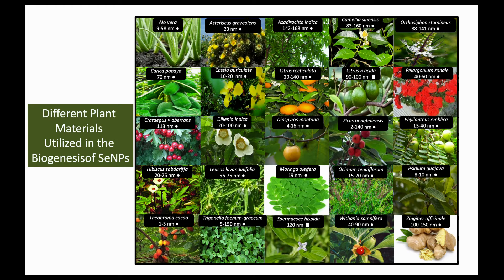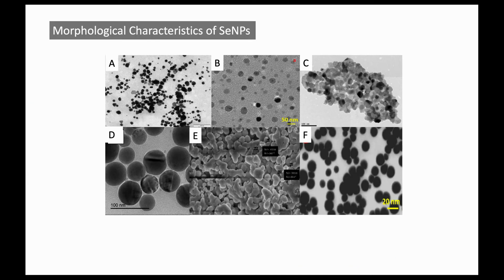Various plant species have been used previously to synthesize selenium nanoparticles of different sizes and shapes having different pharmacological significance. Most of the selenium nanoparticles synthesized previously are reported to be spherical, while some nanoparticles were rod-shaped or irregular.